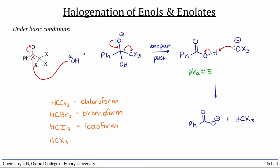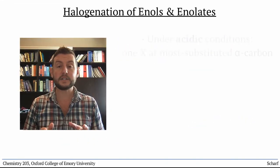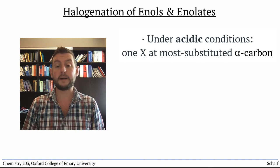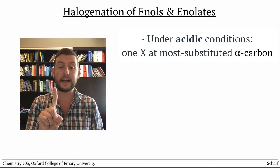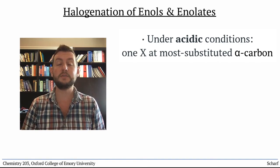So we call this the haloform reaction. To recap, under acidic conditions, enolizable carbonyl compounds react with dihalogens to install a single halogen in the most substituted alpha position.